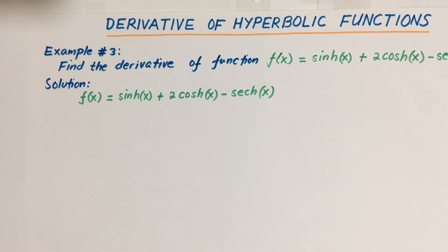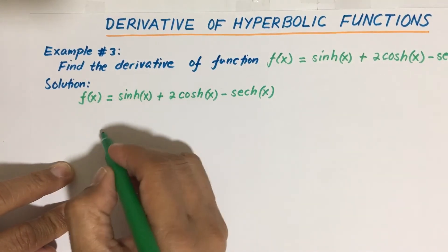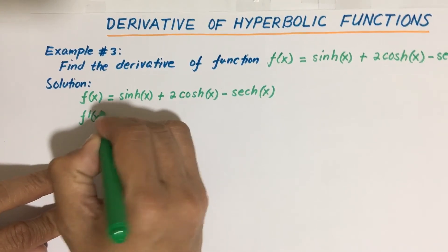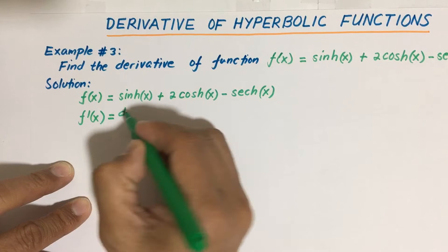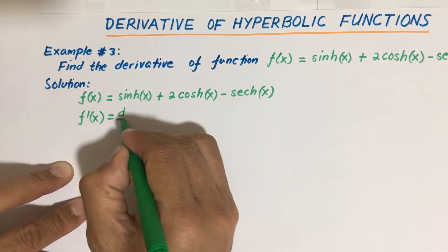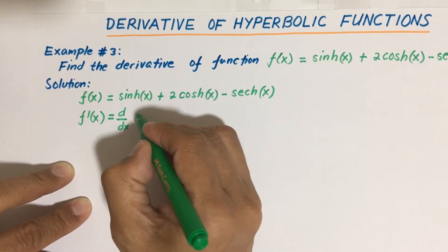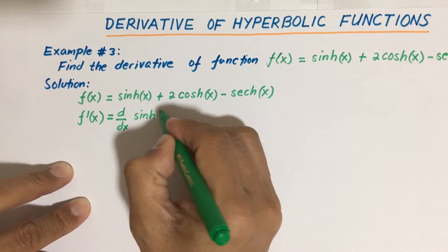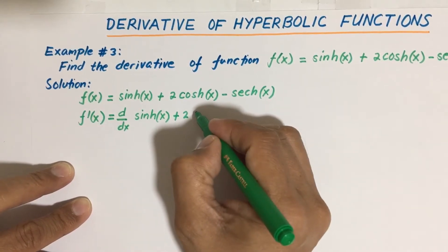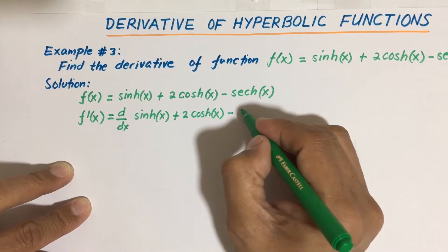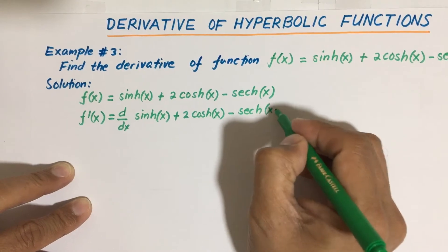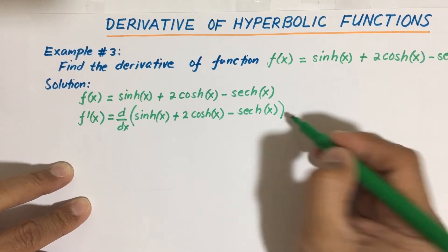For our first term we have hyperbolic sine of x. Differentiating both sides, we have f prime of x equal to the derivative of hyperbolic sine of x plus twice the hyperbolic cosine of x minus hyperbolic secant of x. We will use the sum and difference rule in differentiation — in other words, you can take the derivative of each term.